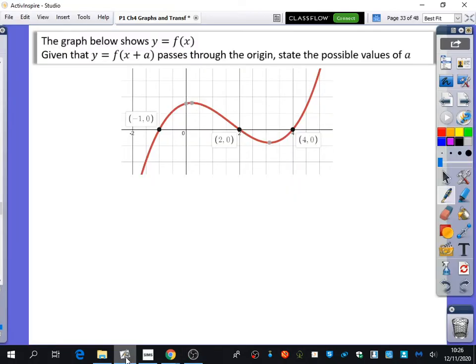We're going to look at doing some of them as kind of like problem-solving type questions now. This one here says that the graph below shows y equals f of x. We could probably come up with the equation, but we don't need to. It looks like a cubic to me, and I can see the roots are minus 1, 2, and 4. Given that y equals f of x plus a passes through the origin, state the possible values of a.